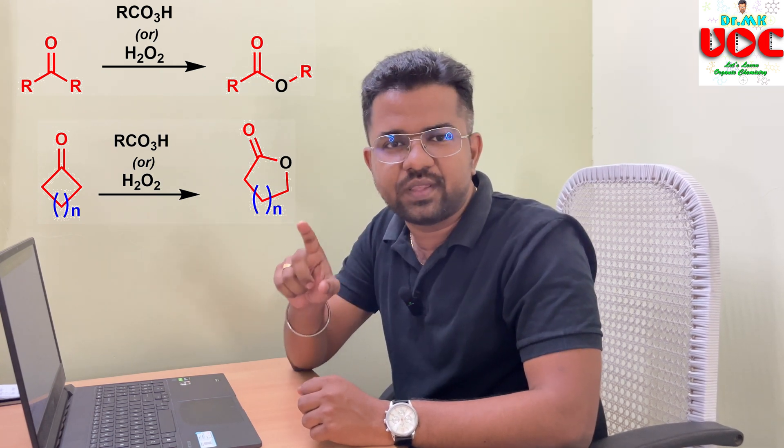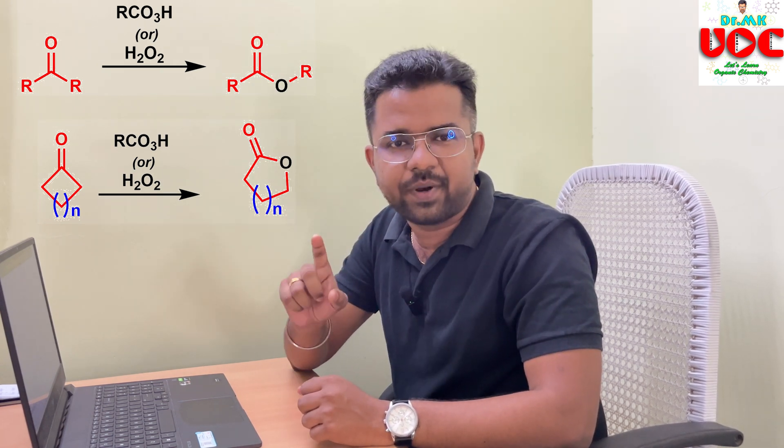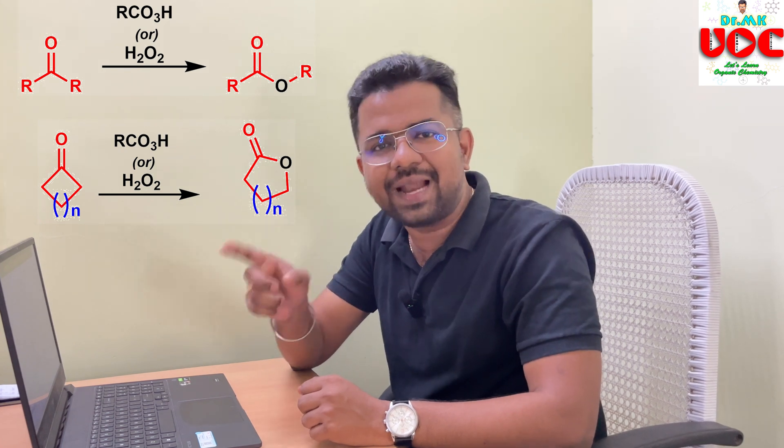Before we discuss the reaction in detail, I would like to give a brief introduction about Baeyer-Villiger oxidation. In this reaction, a ketone is treated with peracid or hydrogen peroxide and it will be converted into an ester. If you have a cyclic ketone, that cyclic ketone when treated with peracid or hydrogen peroxide will be converted into a lactone.